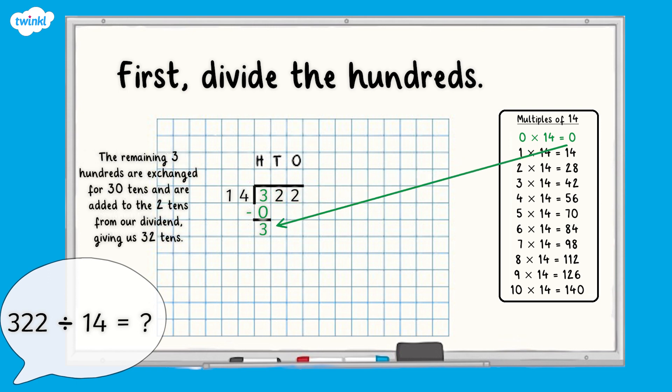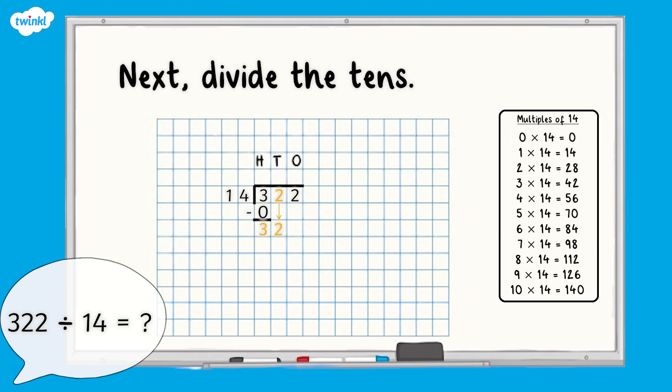These hundreds are exchanged for 30 tens and are added to the two tens from 322, giving us 32 tens. Next, divide the tens.